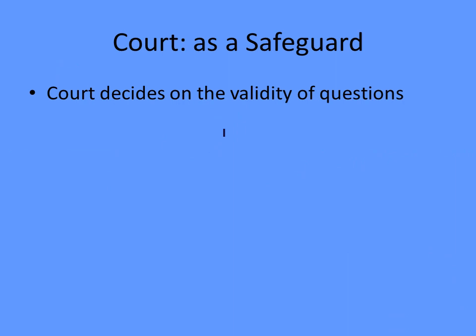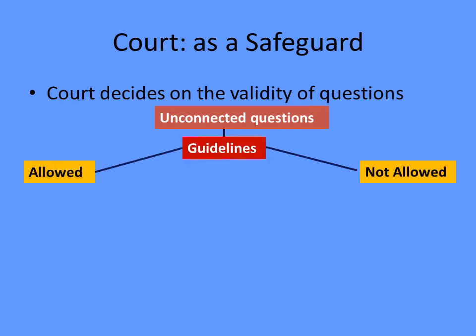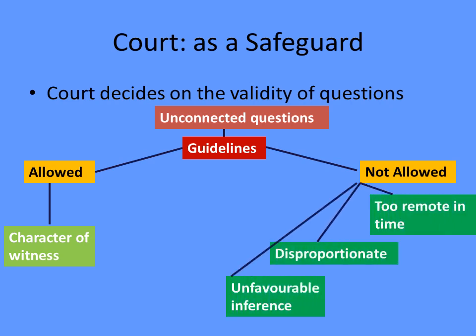The advocate enjoys a lot of power to destroy the credibility of a witness, but that power is regulated by the court. The court acts as a safeguard in protecting witnesses. Whenever a question is asked that is unconnected to the case and its only object is to discredit the witness, the court follows guidelines on what questions are allowed. Questions about character to assess whether the witness should be believed are generally allowed, but the court often disallows questions that are too remote in time and do not serve the purpose of the case.